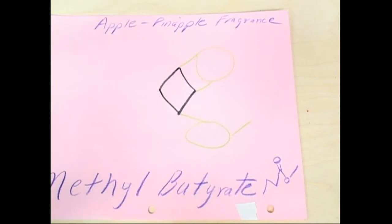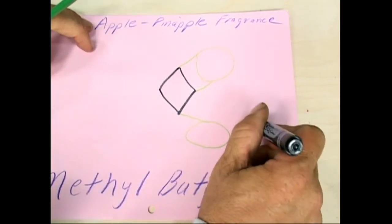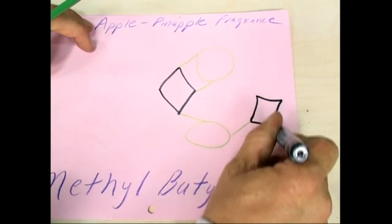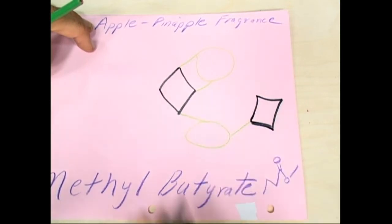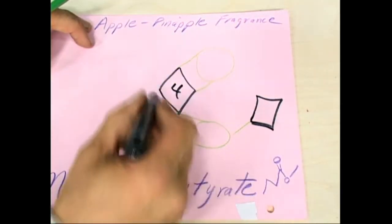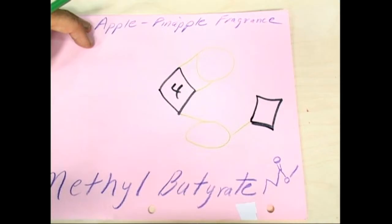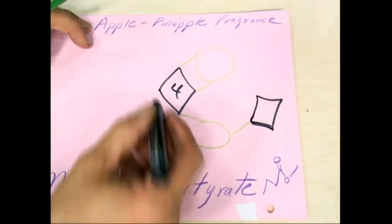And a methyl is on the end of that, so there's the methyl. Now 4, so there's 4. We can just go this way since they're straight carbons, right?